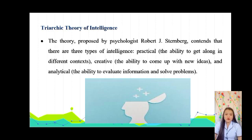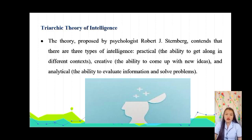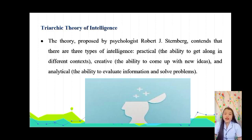The theory proposed by psychologist Robert G. Sternberg contends that there are three types of intelligence: Practical, Creative, and Analytical. Creative is the ability to come up with new ideas. Practical is the ability to get along in different contexts. Analytical is the ability to evaluate information and solve problems.